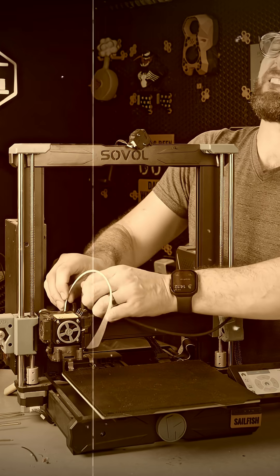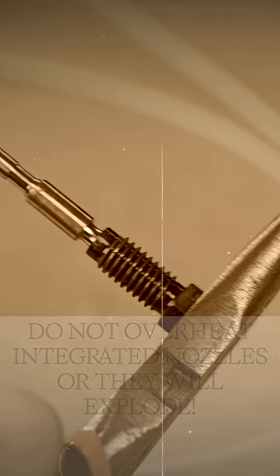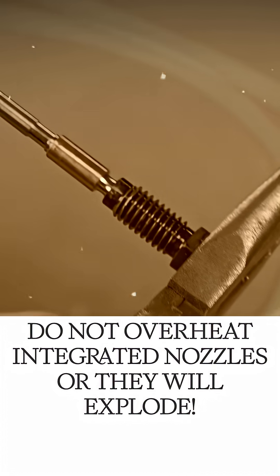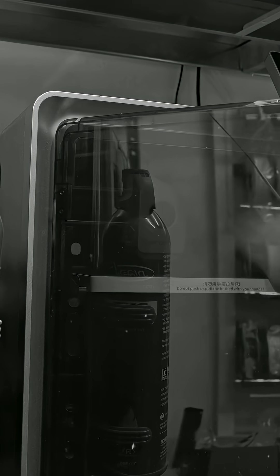Also, pull slowly. For particularly stubborn clogs, like with these increasingly popular integrated heat brake designs, I often prefer to actually take the nozzle out and hold it with a pair of pliers just to avoid damaging the gantry or punching the top of the printer when it releases.